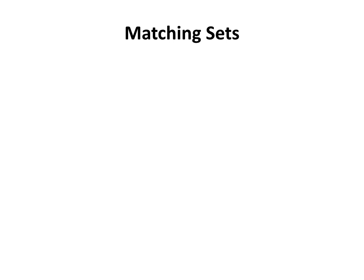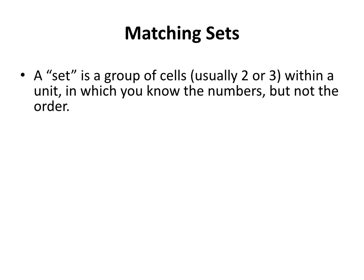The best way I can explain the idea of a matching set is that it is an area of the puzzle, usually two to three cells. In rare cases it may be more than that, but most of them will be two to three cells large. And the idea is you will know the numbers that will go into those cells, but you don't necessarily know the order that they will go in. Even without solving those cells, you can separate those cells out and ignore the number choices elsewhere in the unit, whether that unit be a 3x3 box, a row, or a column.